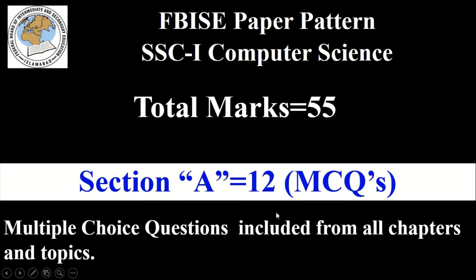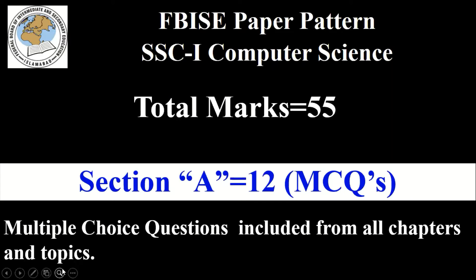Section A MCQs are not only included from the exercises given at the end of each chapter, but also from different topics. So MCQs could come from any topic of any chapter. Section A has 12 marks.